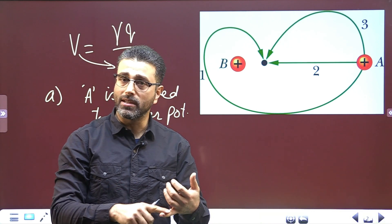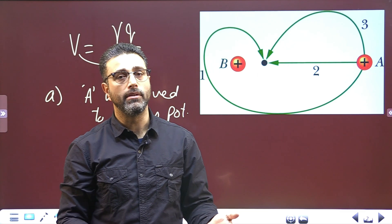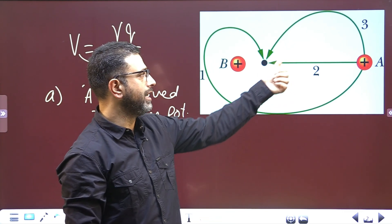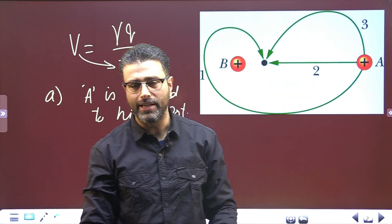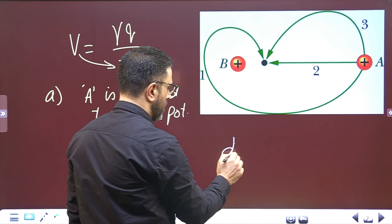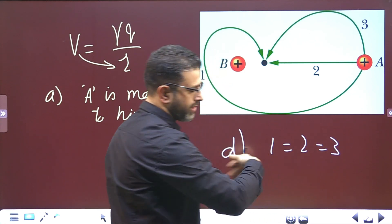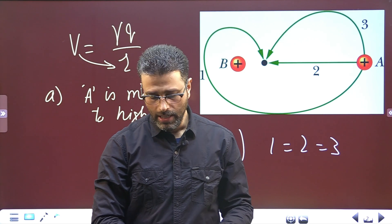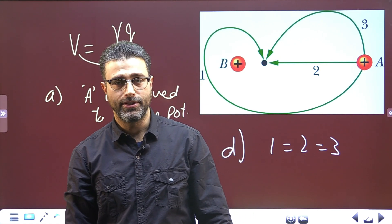Work done by a conservative force — and work done against a conservative force — is path independent. So it doesn't matter if you take charge A along path one, path two, path three, or any other path; the work done will remain the same. Therefore for part D: path one equals path two equals path three. Work done is the same along all paths, both by the field and against the field, because this is a conservative field.